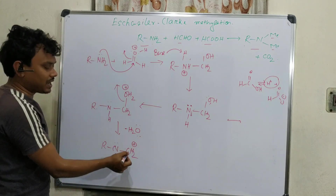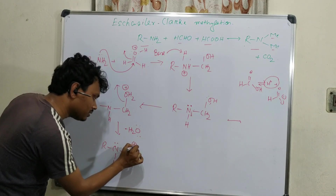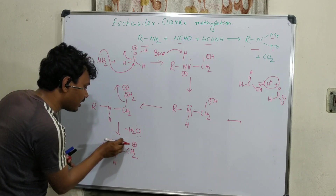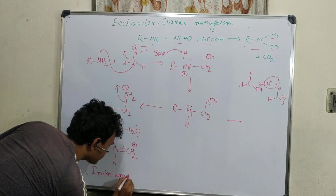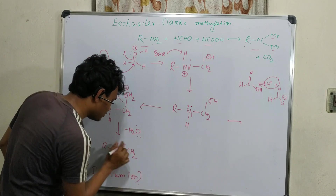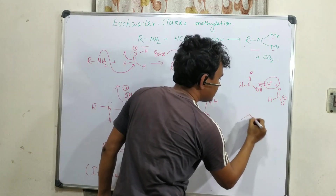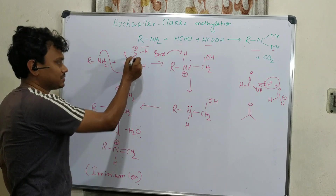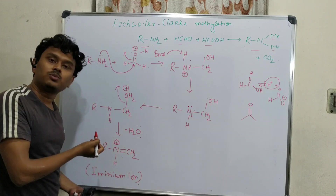This is a carbocation, sp² hybridized. The lone pair on nitrogen donates into this, resulting in double bond formation — this species is called the iminium ion. The positive charge should be on nitrogen, not on carbon. Comparing this iminium ion versus formaldehyde: the iminium ion is more electron-deficient and therefore more electrophilic than the aldehyde, due to the presence of the positive charge.